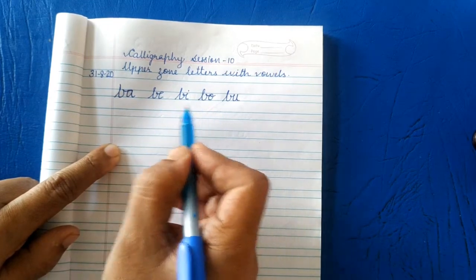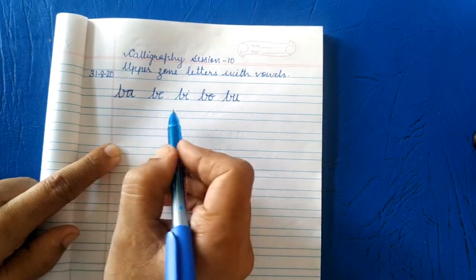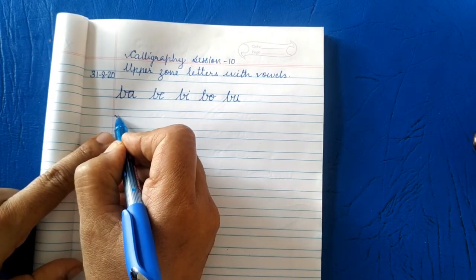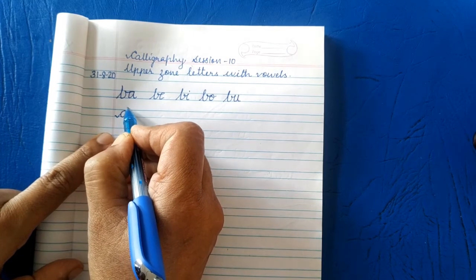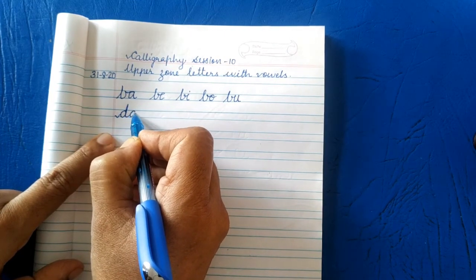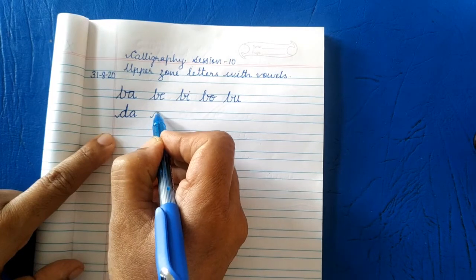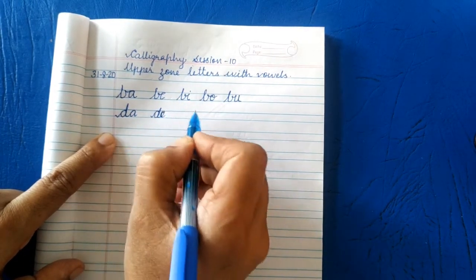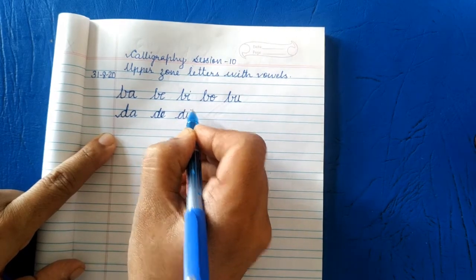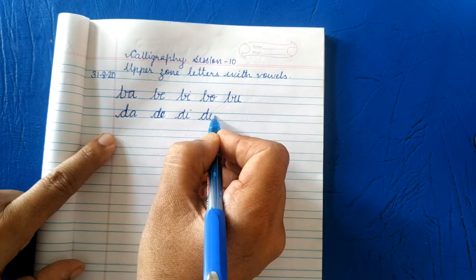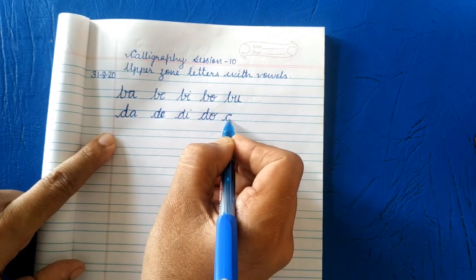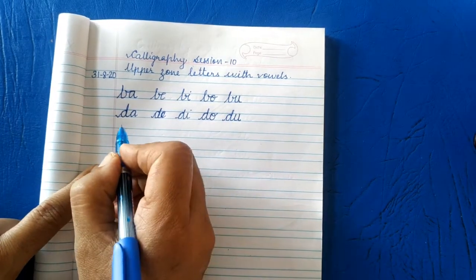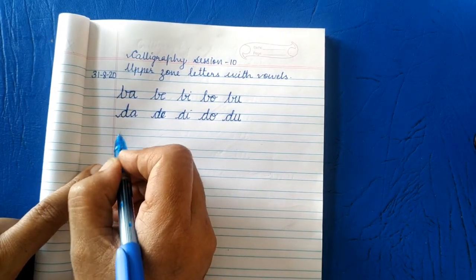So we are connecting the upper zone letters with the vowels. Next letter is D. Make a curve, write D, DA, next DE, next DI, DO and DU.